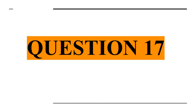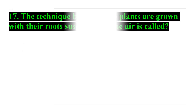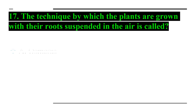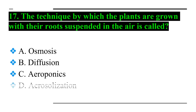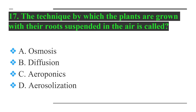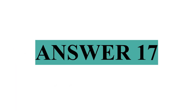Question number seventeen: the technique by which plants are grown with their roots suspended in the air is called — Option A: osmosis, Option B: diffusion, Option C: aeroponics, and Option D: aerosolization. Answer number seventeen: Option C — aeroponics.